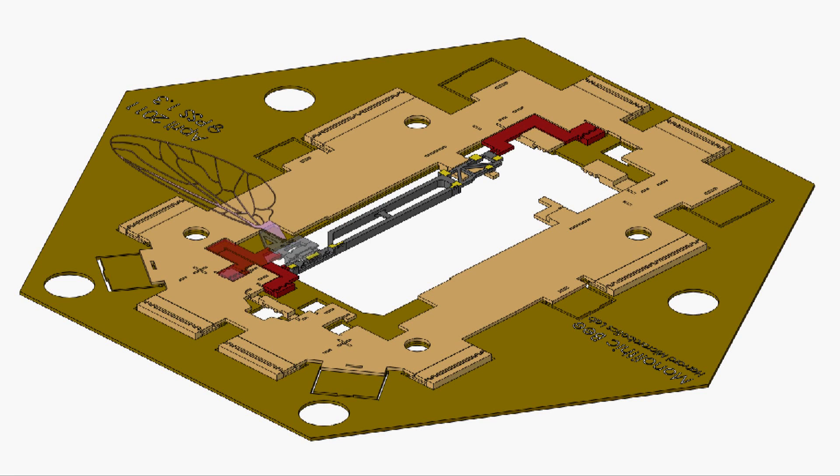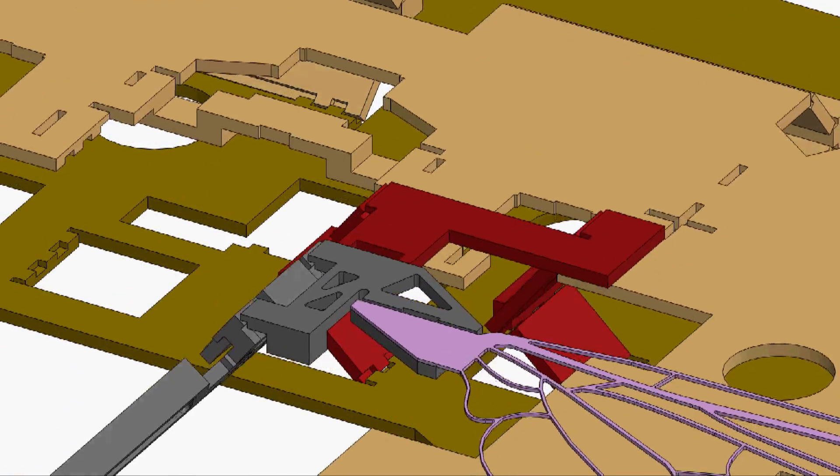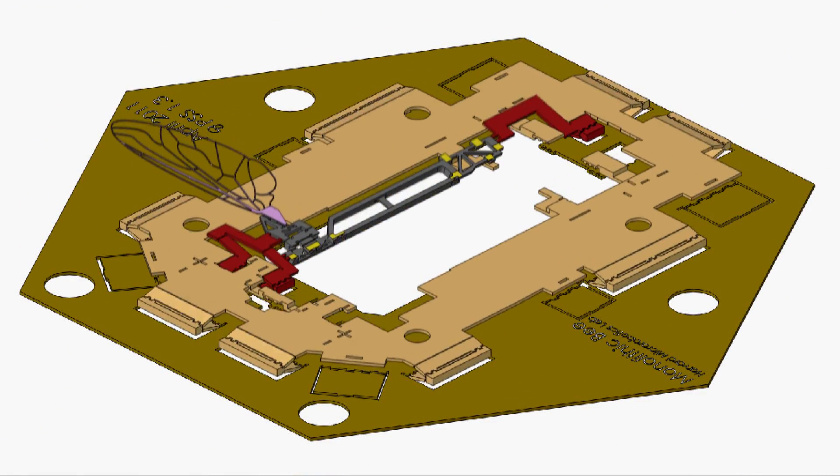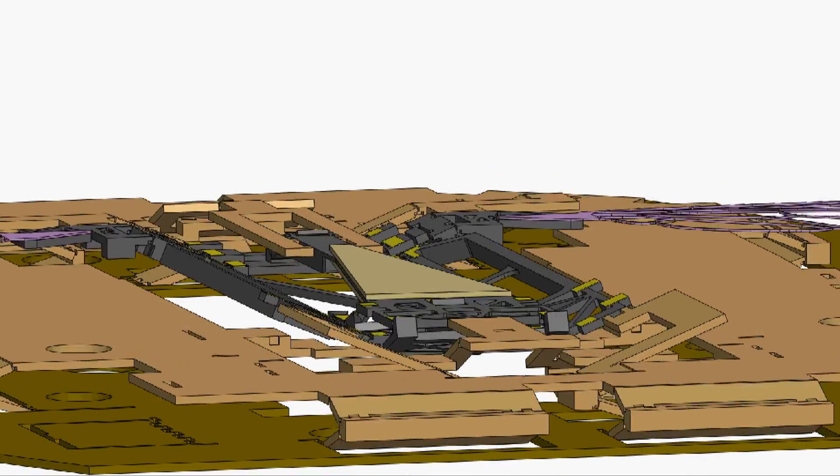More complex motions can be created by combining multiple interior linkages. Here, two linkages form a parallelogram that keeps the wing level. Mobi uses nine interior linkages in total for three-dimensional assembly.